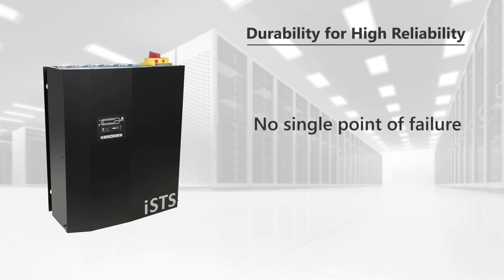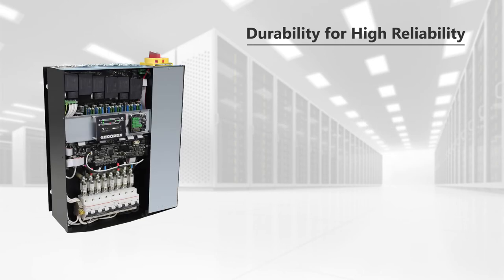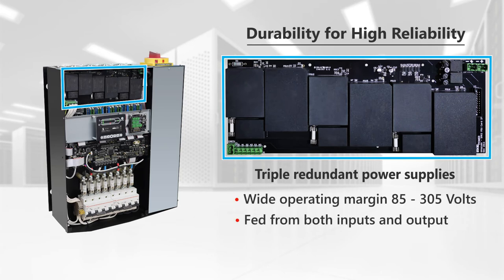The ISTS system uses multiple independent power supply buses to eliminate any single point of failure. Power supplies are triple redundant, with a wide operating margin from 85 to 305 volts, and are fed from both inputs and output.